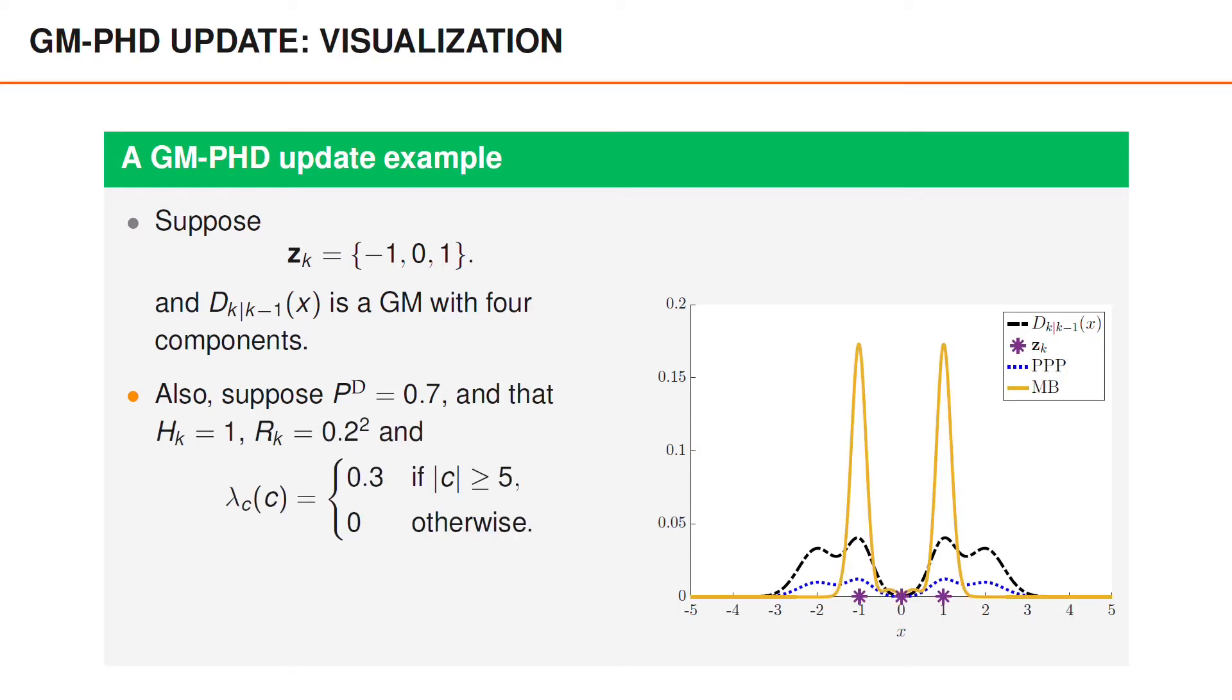suppose that the measurement model is such that hk is 1 and that the standard deviation of the measurement noise is 0.2. Finally, we assume that the clutter intensity is 0.3 in the interval minus 5 to 5.